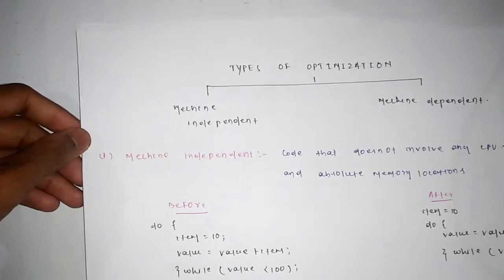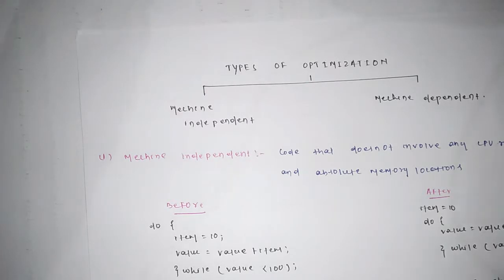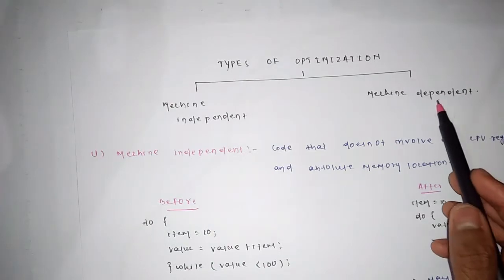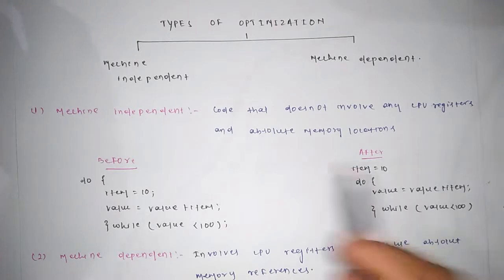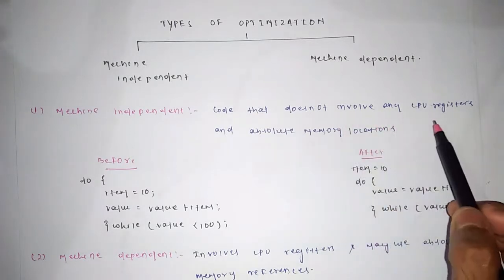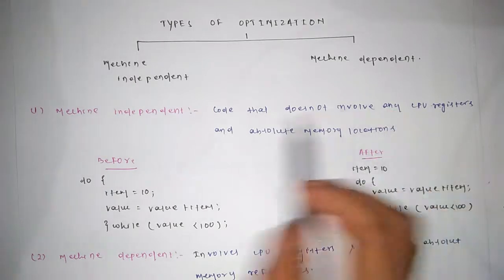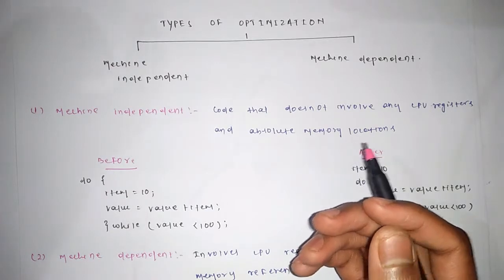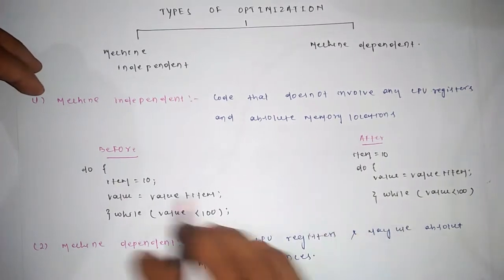Next we will see types of optimization. There are basically two types of code optimization technique — first one is machine independent and the second one is machine dependent. Machine independent means the code does not involve any CPU register or absolute memory location; simply put, the code does not need any memory or any components of the CPU.